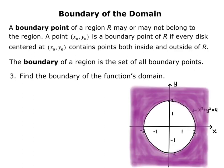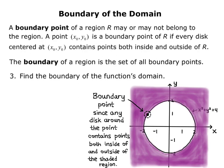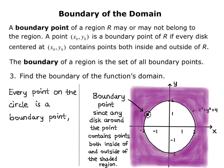Let's look at a point on the circle of radius 2. If we draw a small disk around that point, the disk will contain points both inside and outside of the domain. This is a boundary point since any disk around the point contains points both inside of and outside of the shaded region.